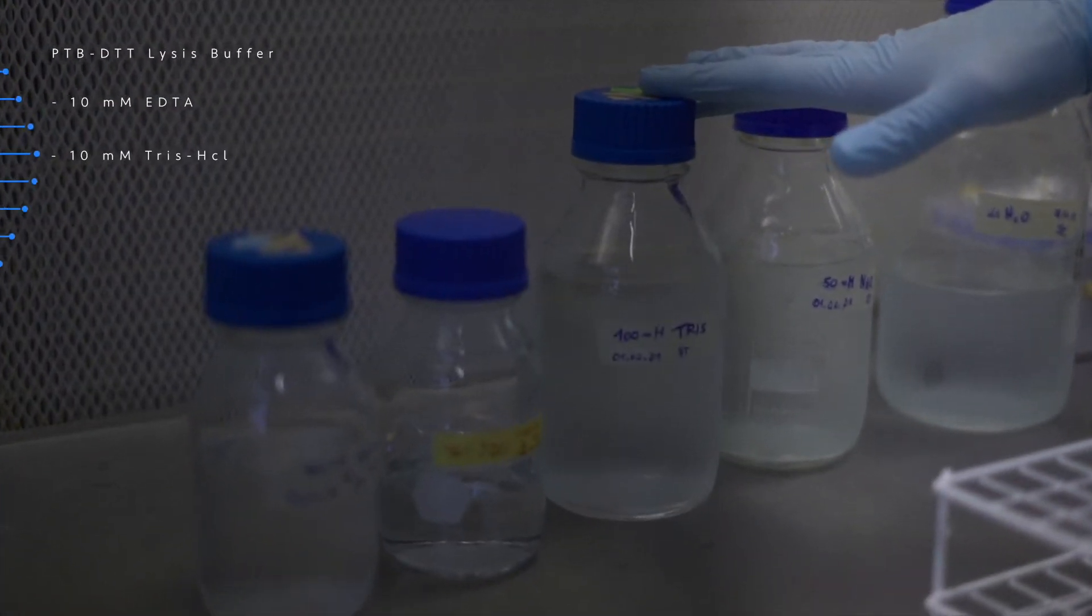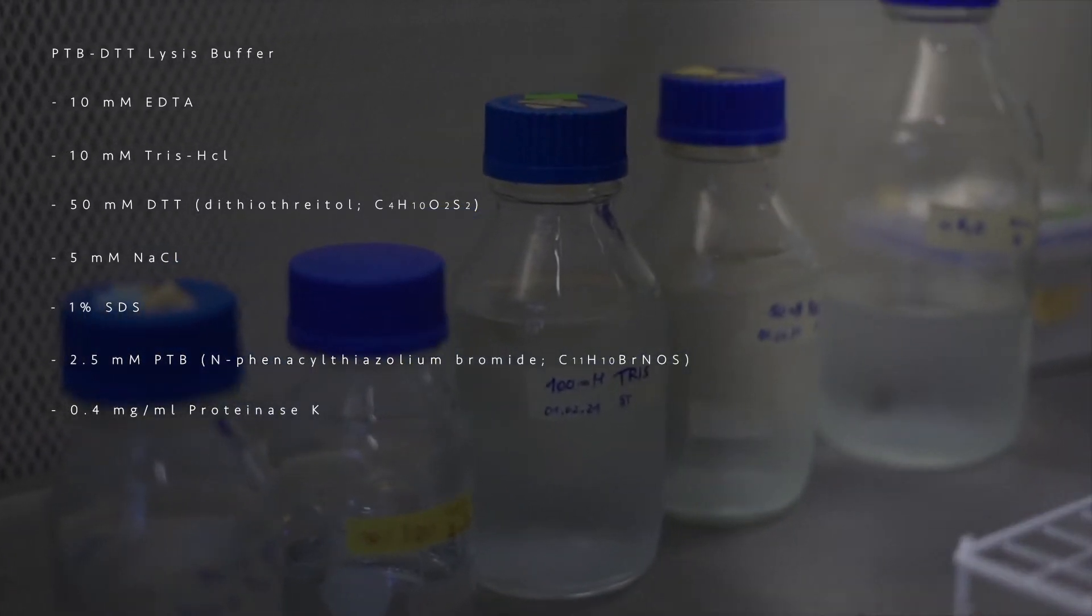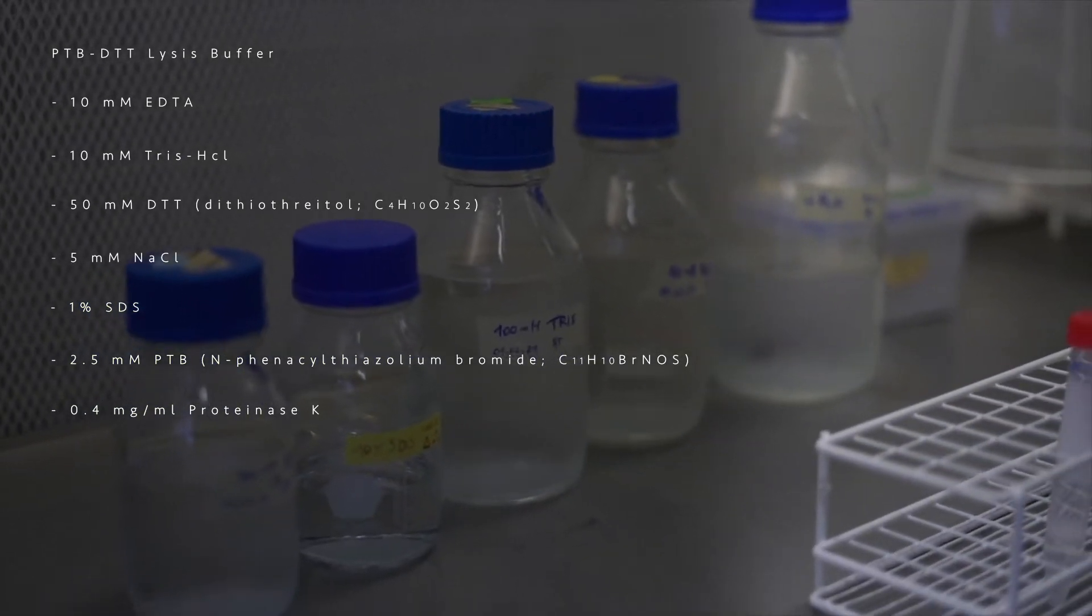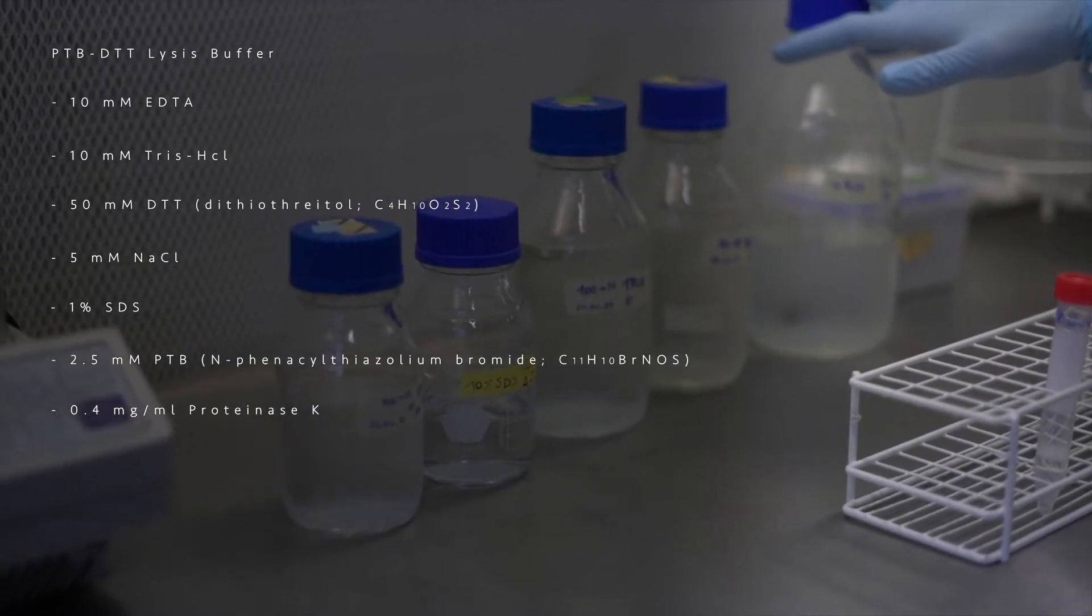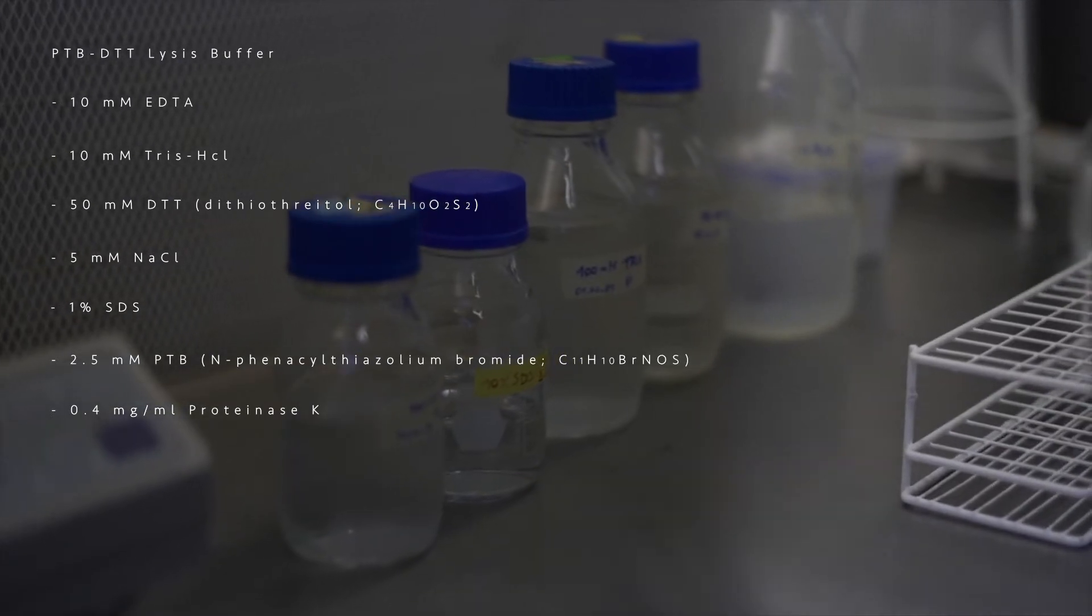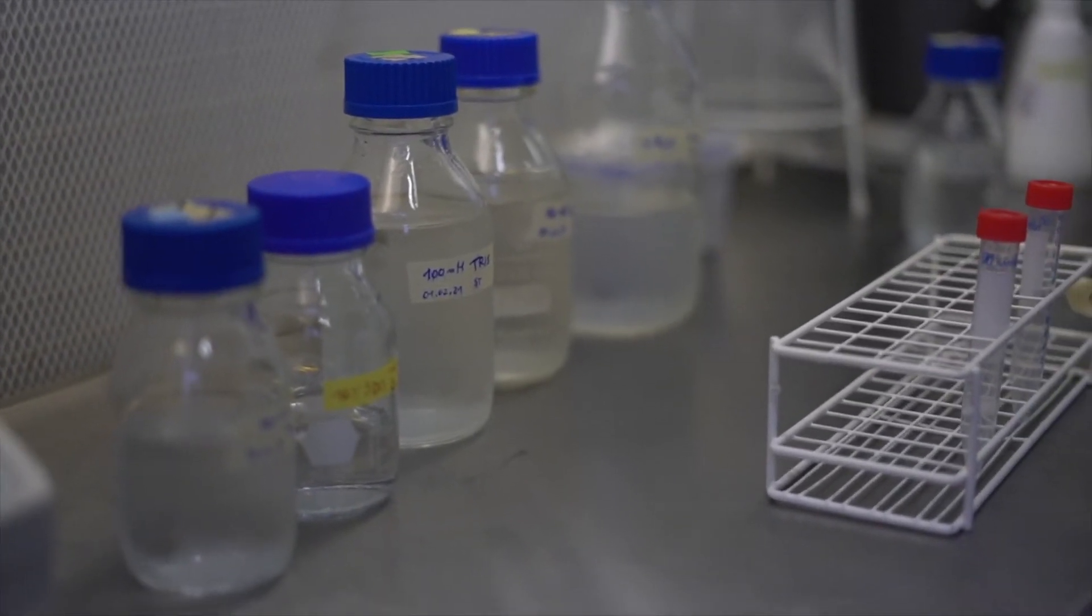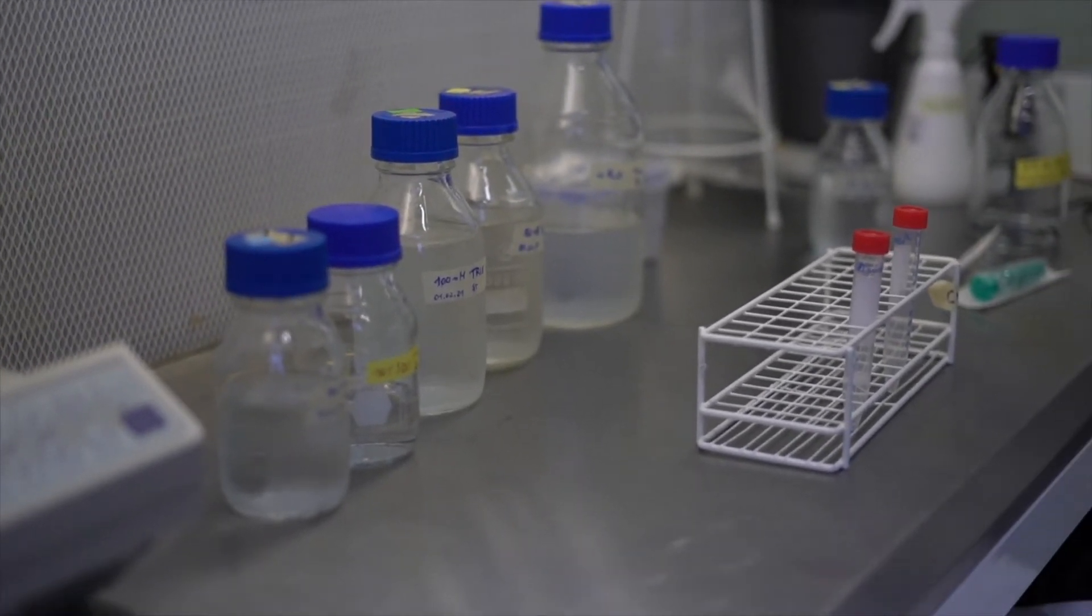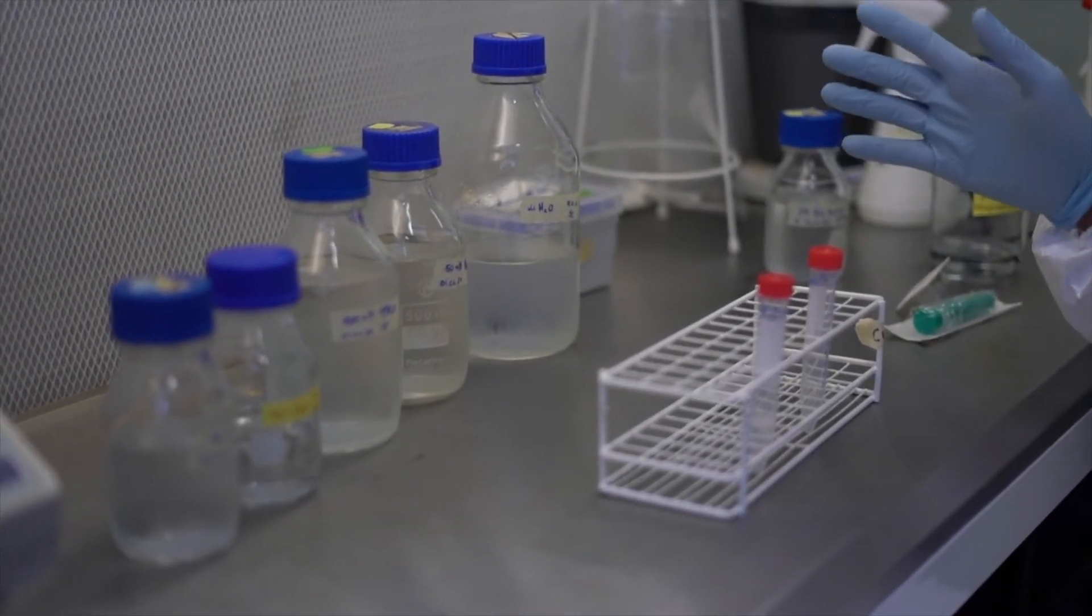You see the composition here on the video. That's how I prepare it. I prepare a 10-fold concentrated stock solution for most of the ingredients that I can store in the fridge or at room temperature for longer time. Then I'm going to mix them. After that I'm going to add two compounds that are more delicate: PTB and Proteinase K. Then at the end I'm going to adjust the concentration using millipore water.